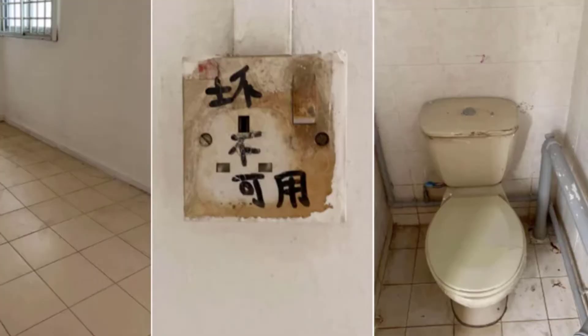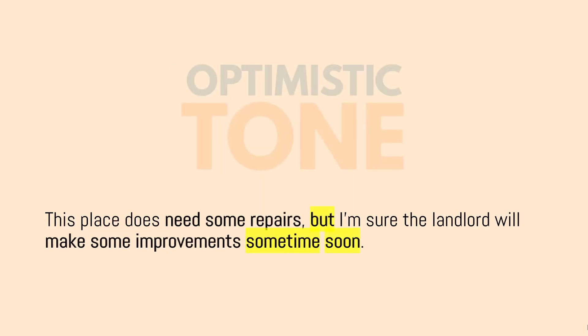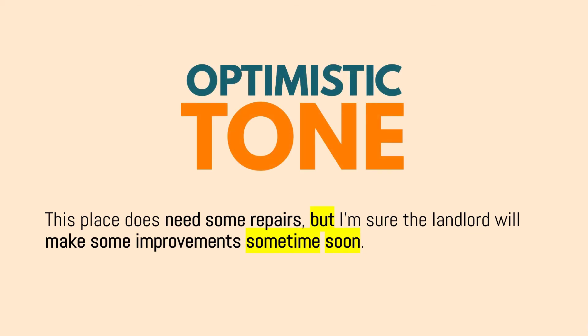Next: 'This place does need some repairs, but I'm sure the landlord will make some improvements sometime soon.' What is the tone? The tone is actually an optimistic tone. Same thing as before — when we have the word 'but,' the behind part is more important. Despite the place being a bit run down and perhaps in disrepair, the person expects that the landlord will actually improve the situation soon. The person is looking forward to it. Whether the landlord actually does that, we are not sure, but the person is expecting it. That part shows the optimism — hence, optimistic tone.